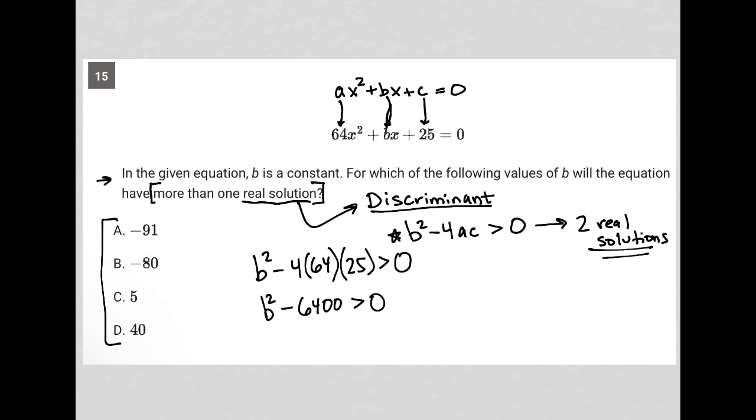Well, let's see what happens. If choice A is the right answer, that means I should be able to plug in negative 91. And this should be a true statement. So let's see what happens. Negative 91 squared is 8,281. Of course, if I only subtract 6,400 from that, what is left over will definitely be positive. So it will definitely be greater than zero. So choice A works.